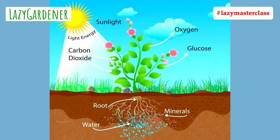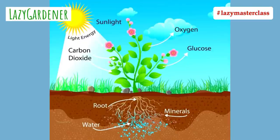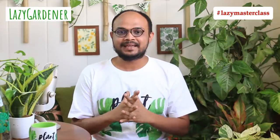The process by which plants make their own food is called photosynthesis — it is very unique to plants. This is a diagram you must have seen in school. Plants take in carbon dioxide, sunlight, water, and minerals. They absorb water and minerals through the roots, and light and carbon dioxide through the leaves. Together with all this, they make their own food.